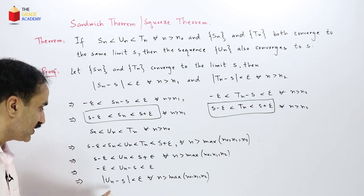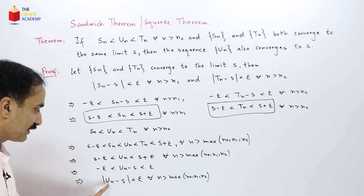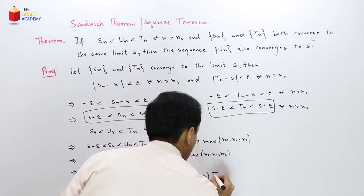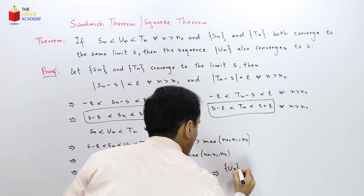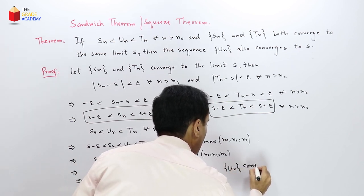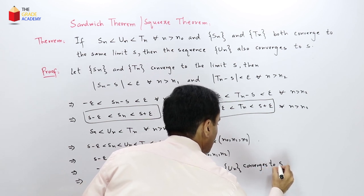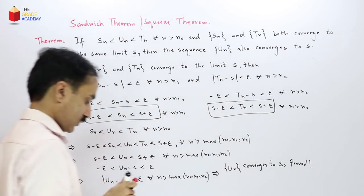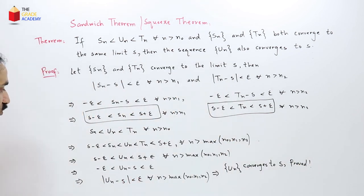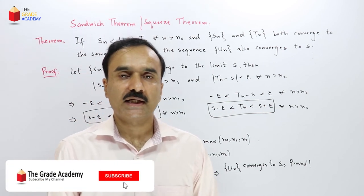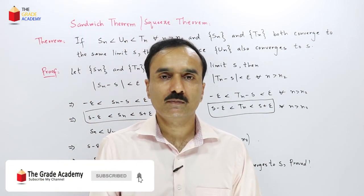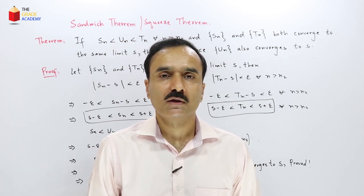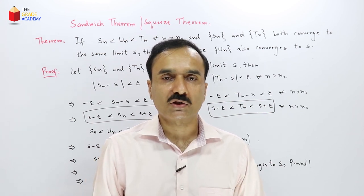By the definition of the limit of a sequence, this implies that the sequence Un also converges to S. This completes the proof of the sandwich theorem, or squeeze theorem, for sequences. In the next lecture, we will prove some other theorems regarding the limits of sequences.